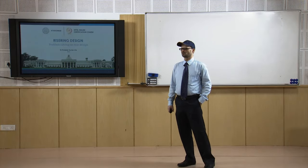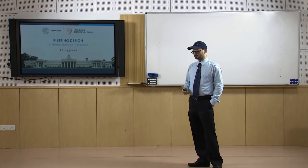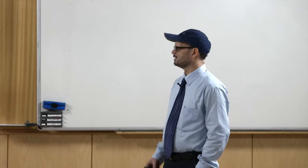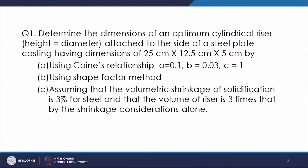Welcome to the lecture on problem solving on riser design. In this lecture, we will solve problems based on calculating the riser volume by different methods. The first question is: determine the dimensions of an optimum cylindrical riser whose height is taken as diameter, attached to the side of a steel plate casting having dimensions of 25 cm by 12.5 cm by 5 cm.